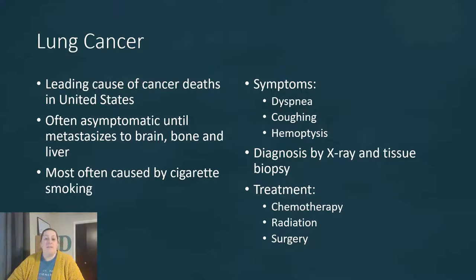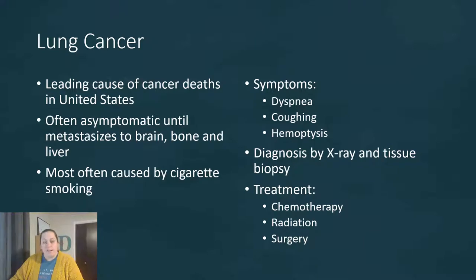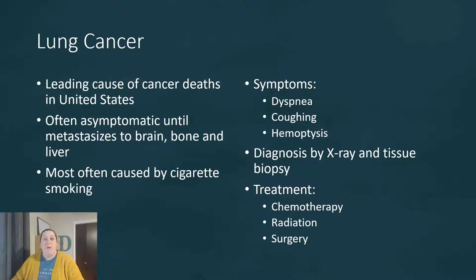The issue with lung cancer is it's often asymptomatic — the patient doesn't have symptoms until it metastasizes to areas like the brain, bones, or liver. There are two groups: small cell lung cancer, also known as oat cell, which is less frequent but grows very fast and metastasizes quickly. Non-small cell lung cancer is more common, treated with surgery, and is very closely linked to cigarette smoking.